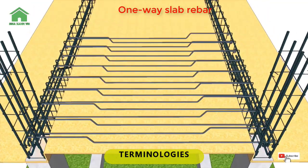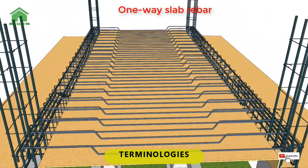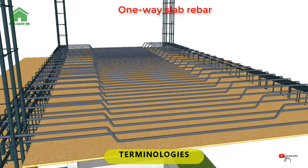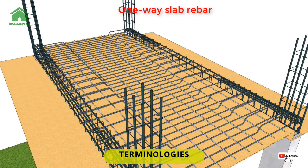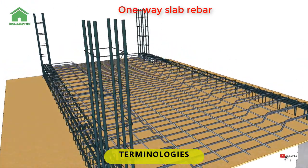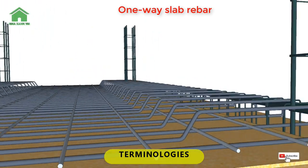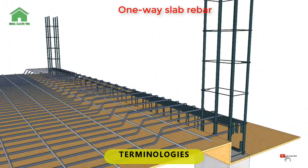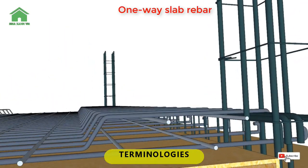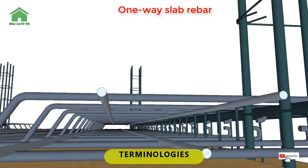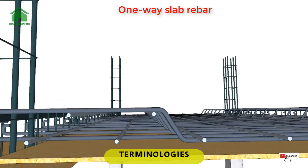16. Main bars — top continuous bars on a slab that bend down at the mid-span. 17. Temperature bars — steel bars in a slab that are designed to resist shrinkage in concrete due to a change in temperature. 18. Distribution bars — top continuous bars on a slab, perpendicular to the end portion of the main bars.